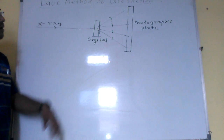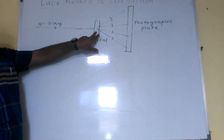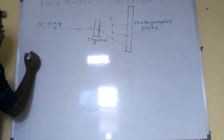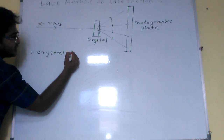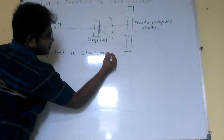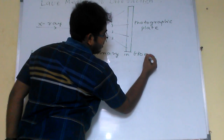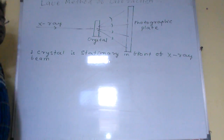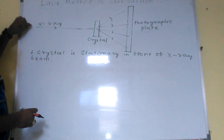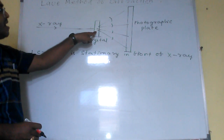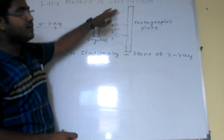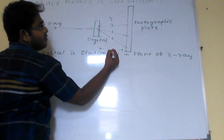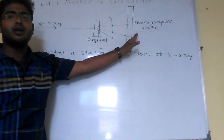Here we place a crystal and the crystal is stationary in front of the x-ray beam. The x-ray beam passes through the crystal, which will diffract the beam, and this is received by the photographic plate which is situated at some distance from the crystal.